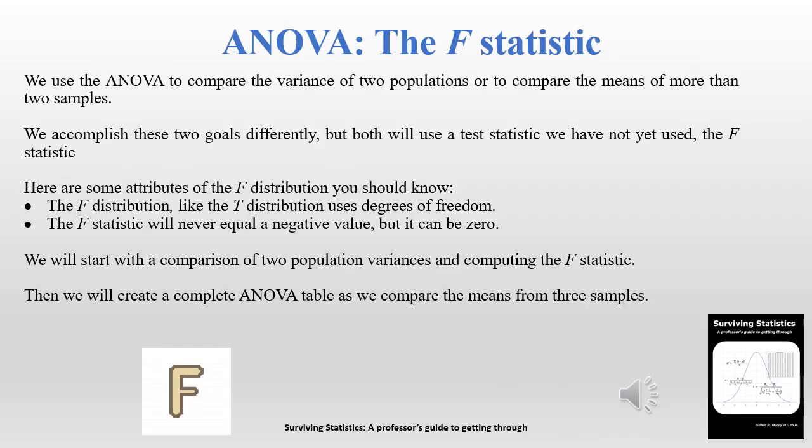When working with the ANOVA we will be introduced to a new statistic: the F statistic. The F statistic is similar to the T distribution in that it does use degrees of freedom. It will never be a negative value but it can equal zero. We're going to use the ANOVA to compare the variances of two populations or to compare the means of two or more samples.